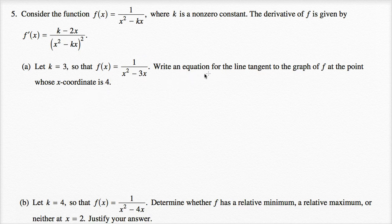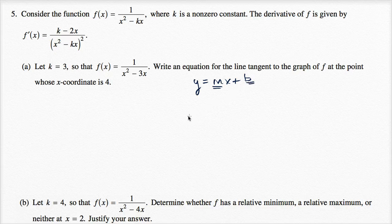To find an equation for a line, the equation of a line is going to be of the form y is equal to mx plus b, where m is the slope of the line and b is the y-intercept. The slope of the line needs to be equal to the derivative evaluated when x is equal to four.